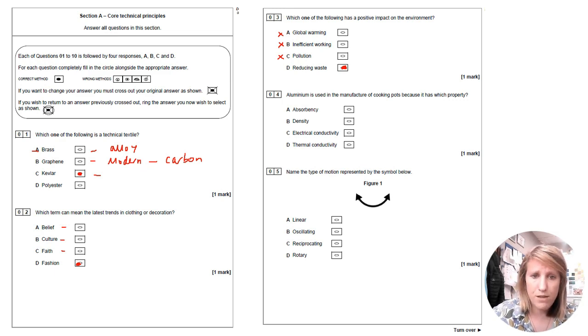Aluminium is used in the manufacture of cooking pots. So straight away we're thinking needs to be a good conductor of heat, needs to be quite malleable to be able to be shaped into the shape of the pot, maybe needs to be corrosion resistant. Because it has which property? Well we wouldn't want an absorbent pot that absorbs moisture, that would be dumb. You wouldn't want something really dense and heavy. Electrical conductivity is not needed. We want thermal conductivity to transfer the heat from the hob to the food that is trying to be cooked. So it's thermal conductivity.